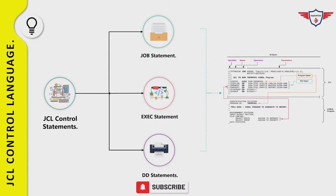Do you really need to include all three types of control statements in a JCL? The answer is no. Every job must contain a minimum of two types: a job card to specify job-specific information, and an execute statement to provide the program or utility name. DD statements are optional and only required if your program or utility uses any dataset.